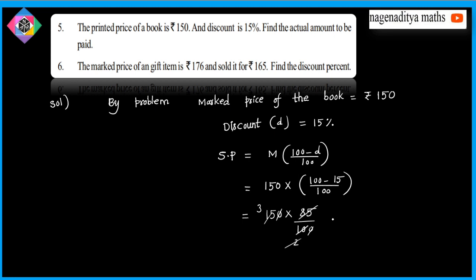After simplification: 85 times 1.5 equals 127.5. So the selling price is 127 rupees 50 paise.